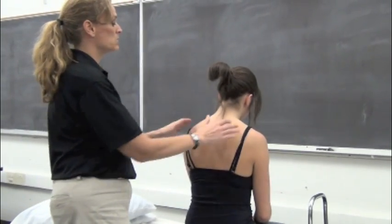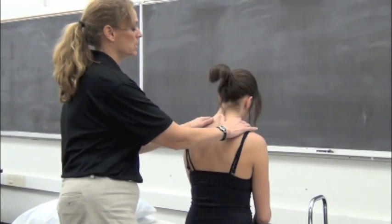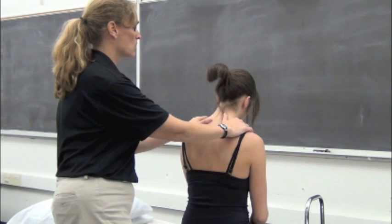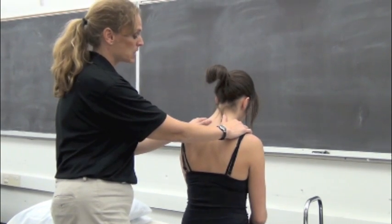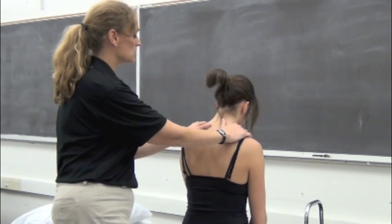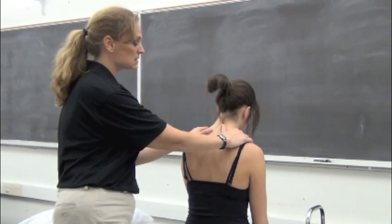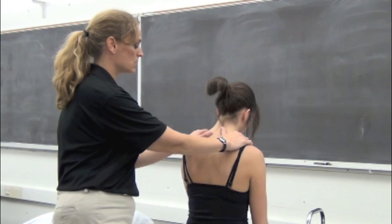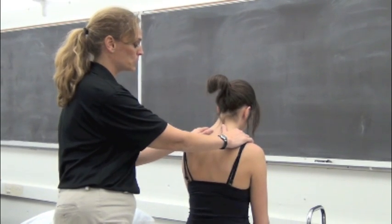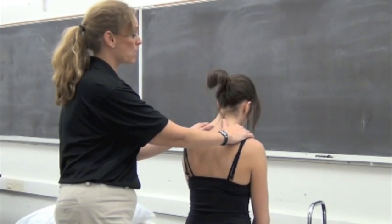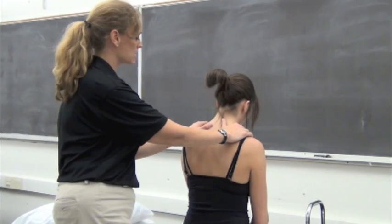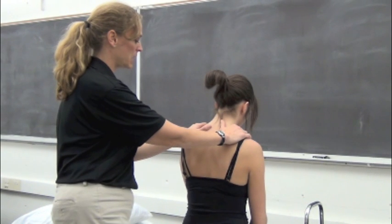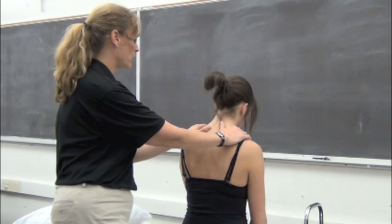The first thing you want to do is simply place your hands on the shoulders to see how the patient responds to your touch, to get a sense of the tenseness of the most superior muscles, and also to quiet yourself as a therapist to start to focus on your hands and what you're feeling.